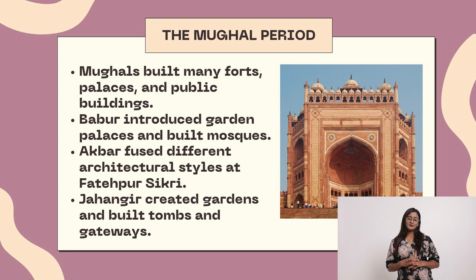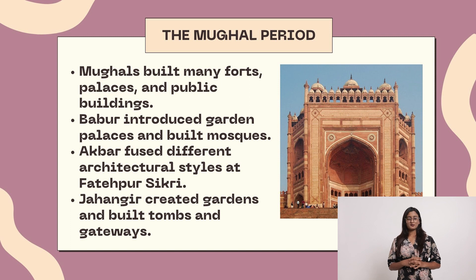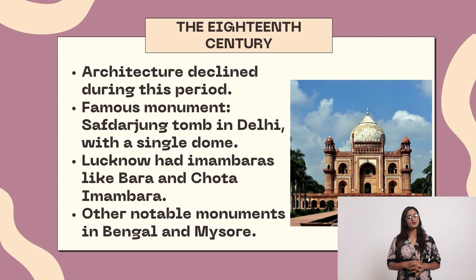The Mughal period: Mughals built many forts, palaces and public buildings. Babur introduced gardens, palaces and built mosques. Akbar fused different architectural styles at Fatehpur Sikri. Jahangir created gardens and built tombs and gateways.